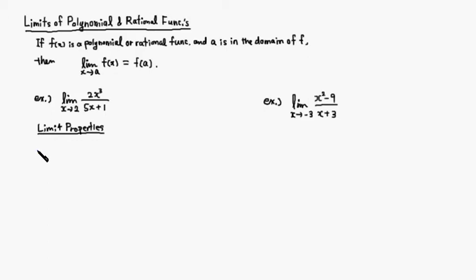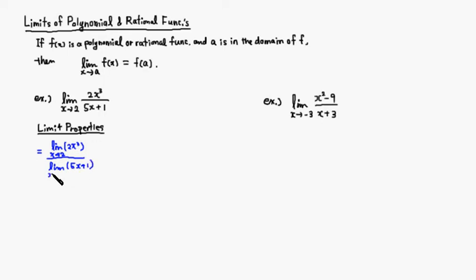Using our limit properties: if you have a quotient, we can take the limit of the numerator and denominator separately. So we have the limit of 2x³ as x approaches 2, over the limit of (5x + 1) as x approaches 2. Since we have a constant multiple of 2 in the numerator, we can place it outside.